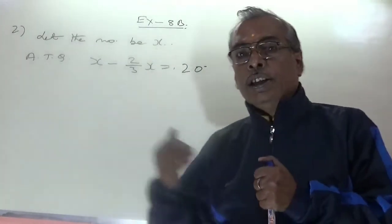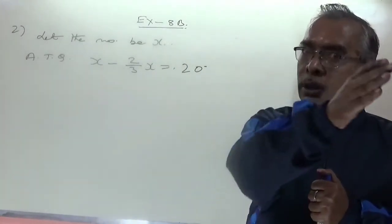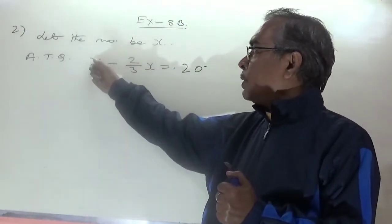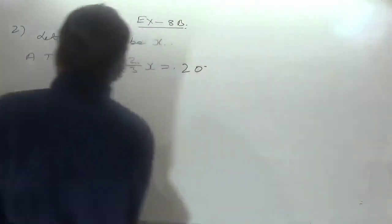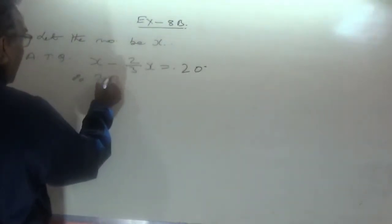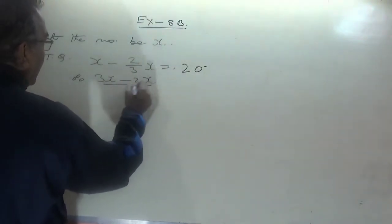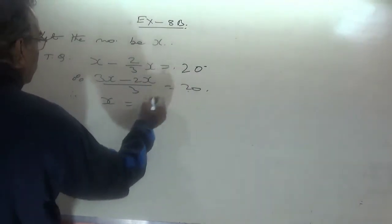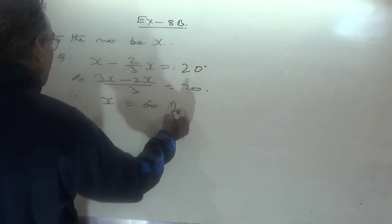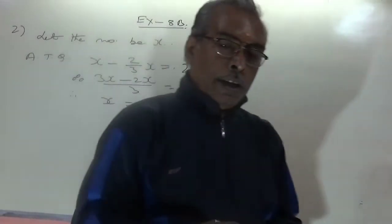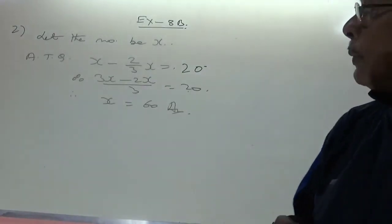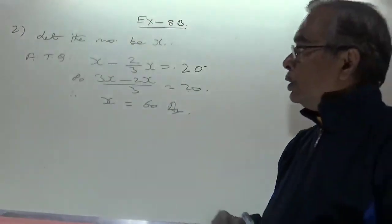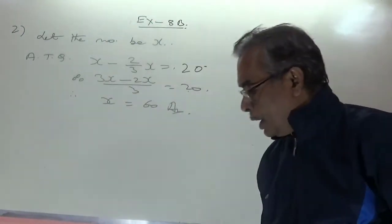Solving: 3x minus 2x over 3 equals 20, so x by 3 equals 20, therefore x equals 60. The original number is 60. You can verify: two-thirds of 60 is 40, which is indeed 20 less than 60.